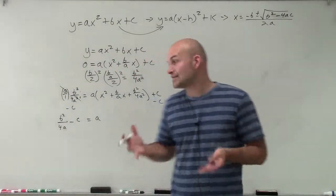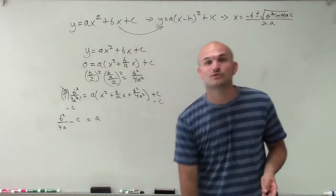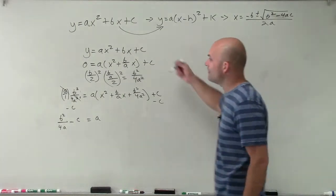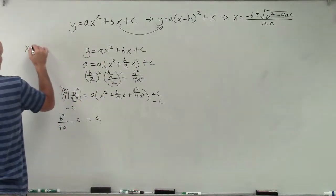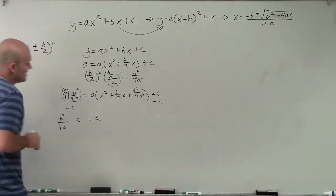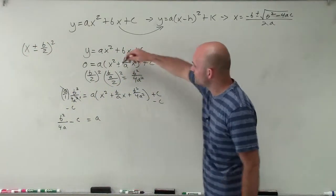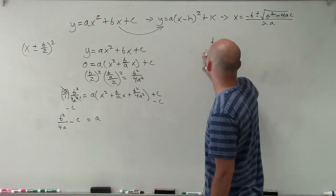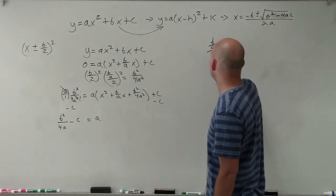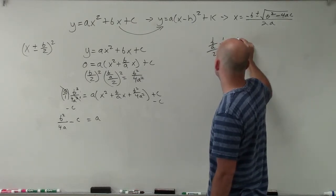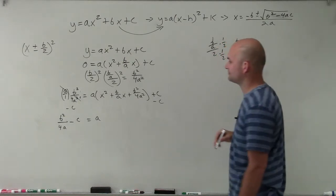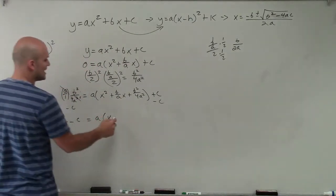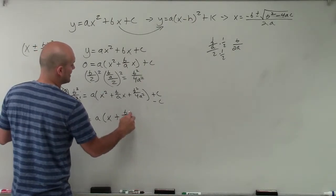Now I need to factor my trinomial. When we complete the square, we create a perfect square trinomial, which factors down to a binomial squared. The binomial square is written as x plus or minus b divided by 2, all squared. So b divided by 2 — since our b here is b over a, when we divide by 2 we get b over 2a. So the factored form is x plus b divided by 2a, all squared.